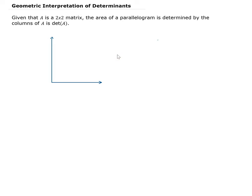In this lesson we are going to talk about the geometric interpretation of determinants. Given that A is a two by two matrix, the area of a parallelogram determined by the columns of A is just the determinant of A.